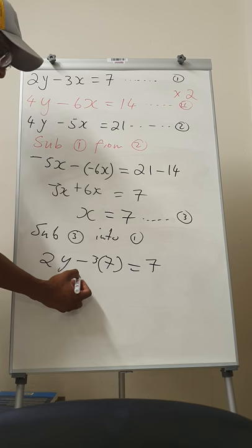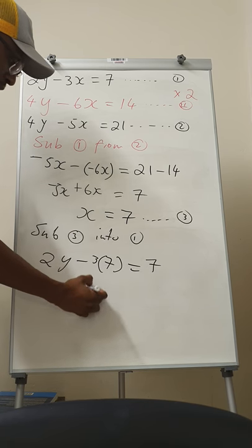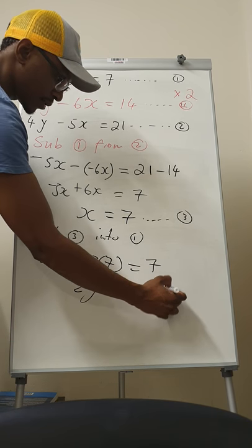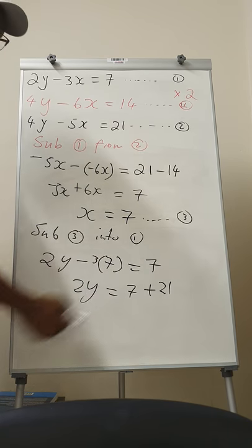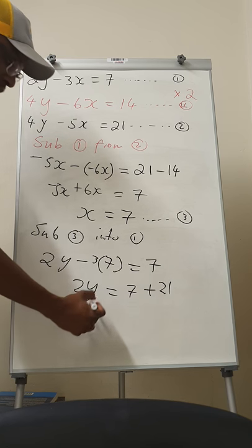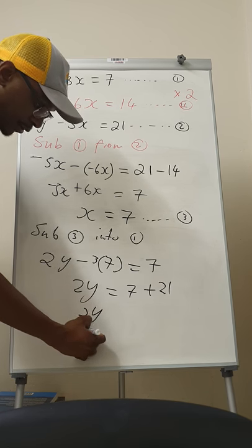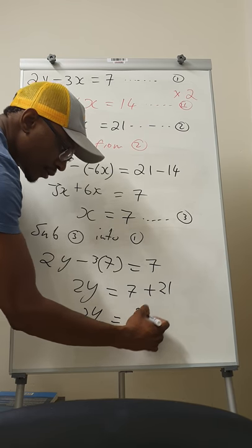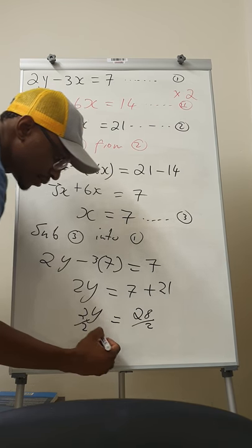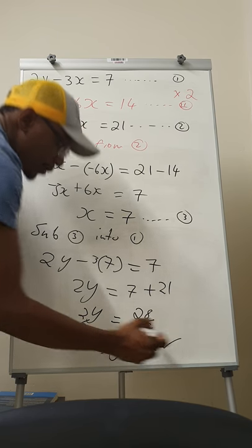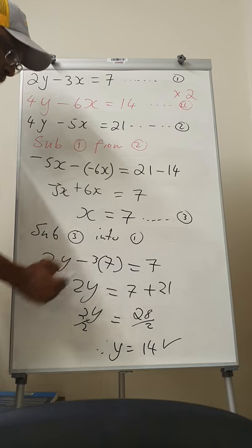And then three times seven is 21. So you have 2y equal to 7 plus 21, which is 28. And therefore divide by two both sides. So you're going to have y equal to 28 divided by 2. Therefore y is equal to 14.